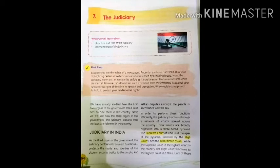These courts are broadly organized into a three-tiered pyramid system. The Supreme Court of India is at the apex of the pyramid, followed by the High Courts, and under them come the subordinate courts. The Supreme Court is the highest court in the country, while the High Court functions as the highest court in a state. Each of these courts functions independently of the influence of the legislature and executive, with their own separate functions and independence.